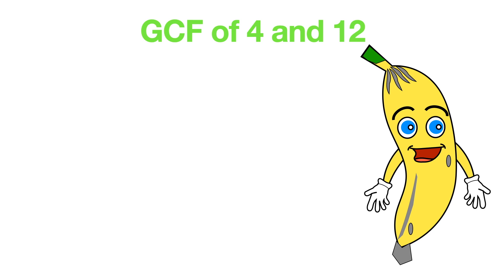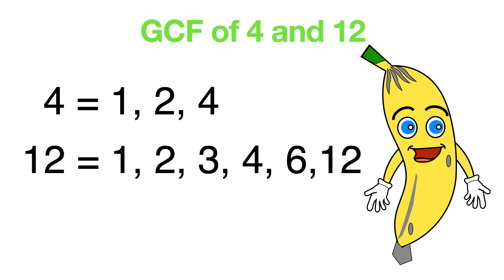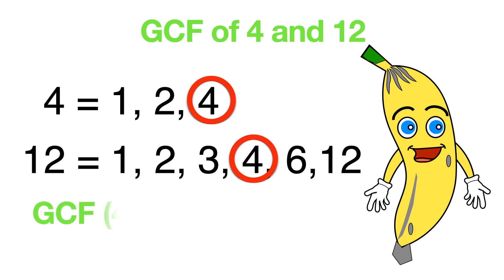Let's find GCF of four and twelve. First we need to find common factors. The factors of four are one, two, and four. The factors of twelve are one, two, three, four, six, and twelve. The common factors are one, two, and four. The greatest number is four. Therefore, GCF of four and twelve is four.